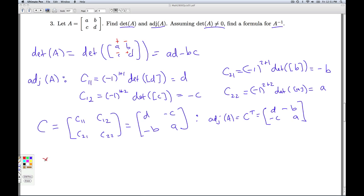Now, from class we know that if the determinant of A is not 0, A inverse exists. A is invertible. And A inverse then is 1 over the determinant of A times the adjoint of A. So assuming that the determinant is not 0,